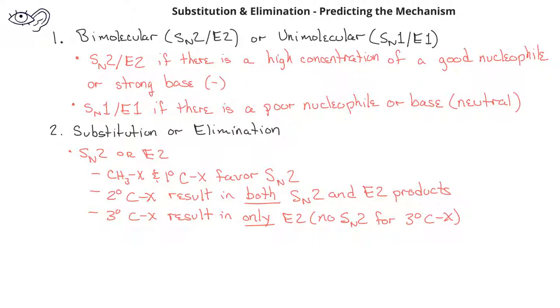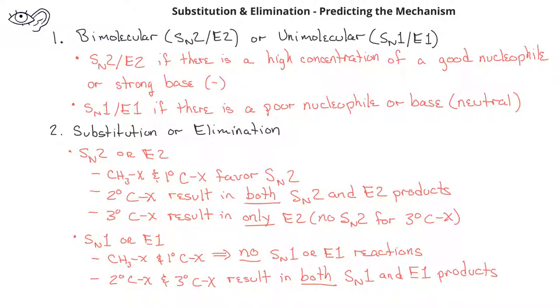When you're deciding between SN1 or E1 mechanisms, if you have a methyl or primary alkyl halide, you'll get neither SN1 nor E1 reactions taking place. However, if you have a secondary or tertiary alkyl halide, you'll get both the substitution and elimination products.